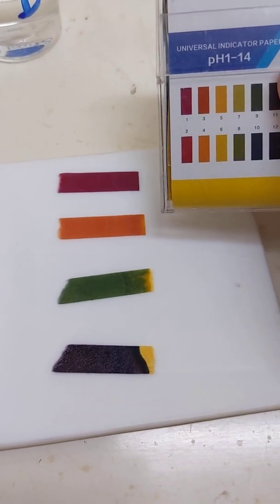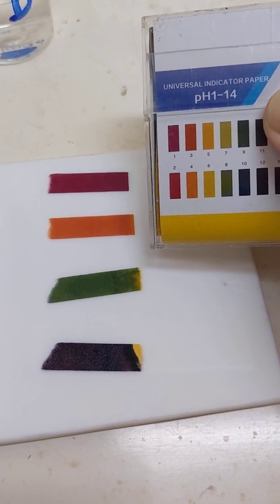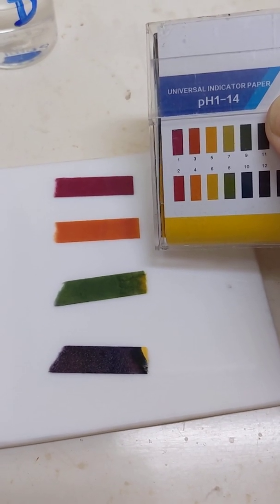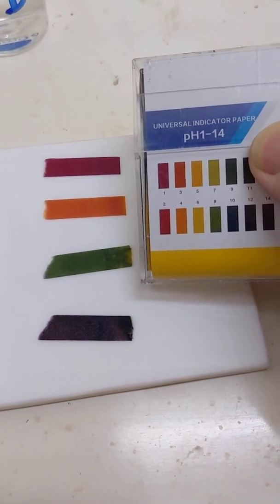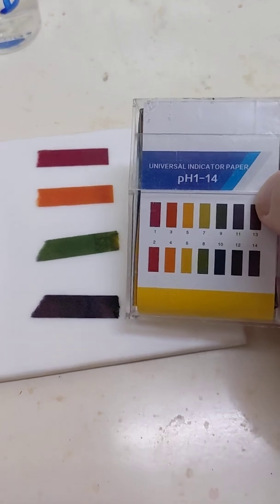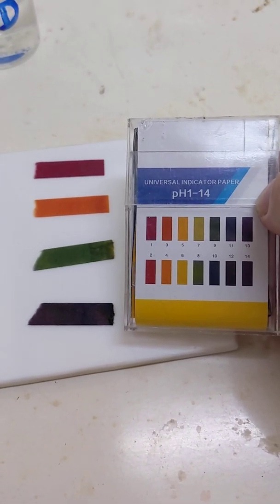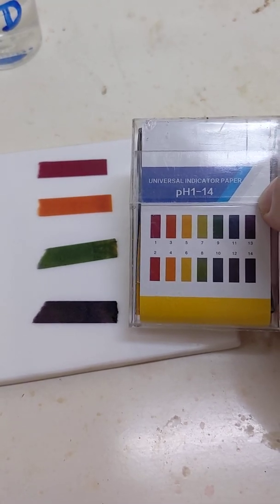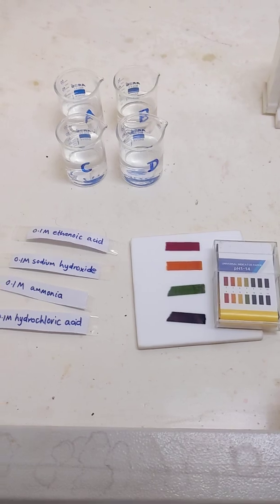Solution A dark red pH 1, solution B orange pH 4, solution C dark green pH 8, and solution D blue purple pH 12 or 13. Can you identify the four solutions?